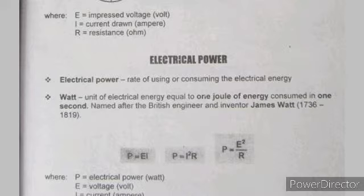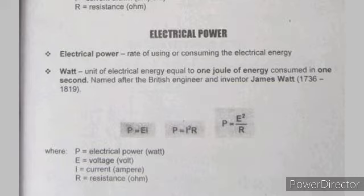What is the formula for power? Power equals E multiplied by I. Also, P equals I squared R, or E squared over R.